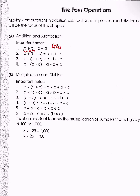So what that means is A plus B is equal to B plus A. For example, if we have 1 plus 2, the answer is going to be the same as 2 plus 1 because they're both going to be equal to 3.